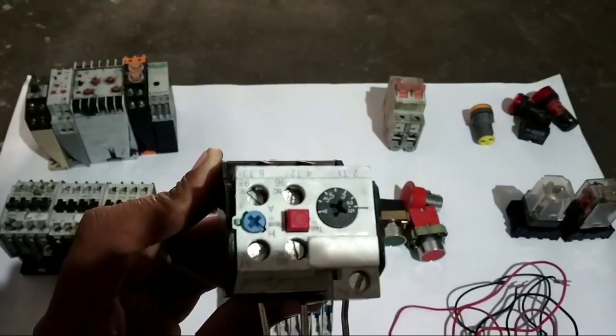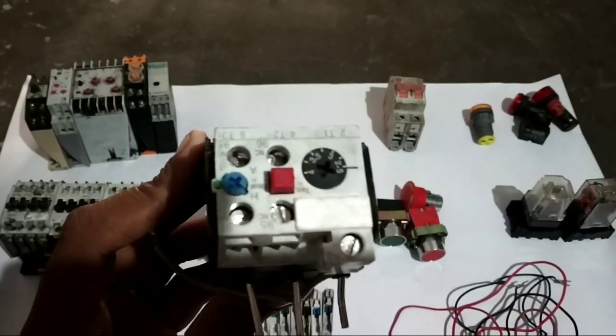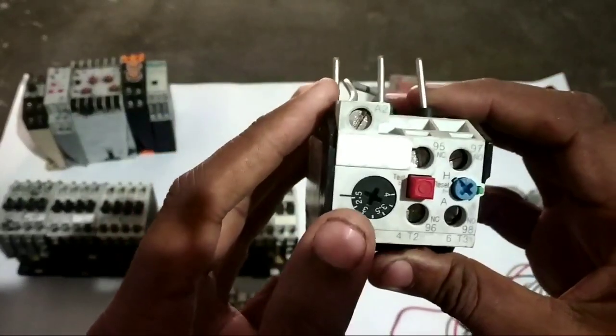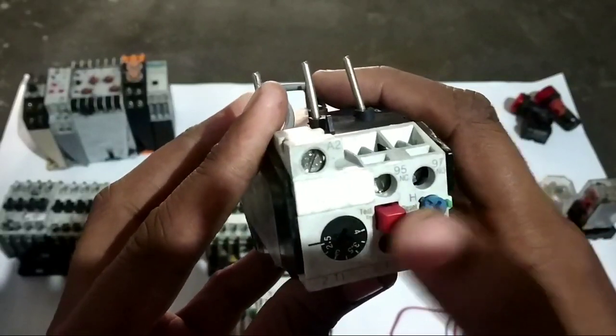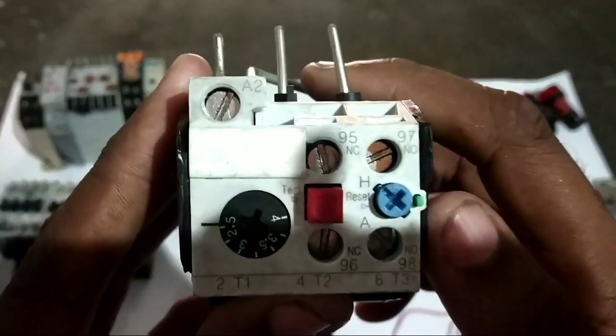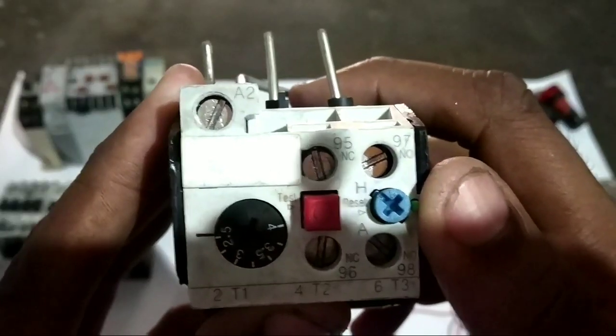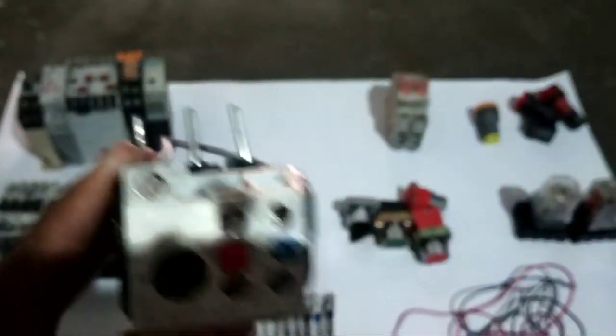Relay is used as a motor. Relay is used as a setting. The motor is used as a trip and research. The manual is used as a manual and automatic. This is automatic.